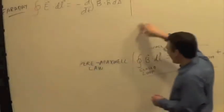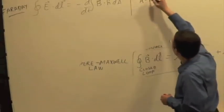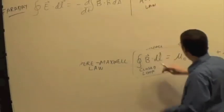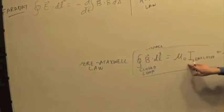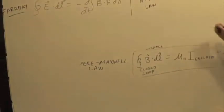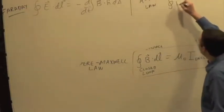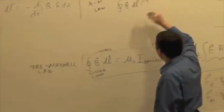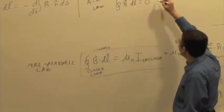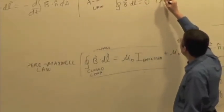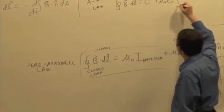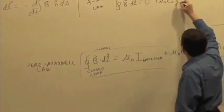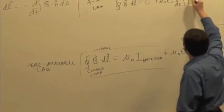And I'm going to write Ampere-Maxwell up here too. Since we already know that the current is zero everywhere, I'm going to write this as B dot dL equal to zero — no current — plus mu naught epsilon zero times the time derivative of E dot dA.